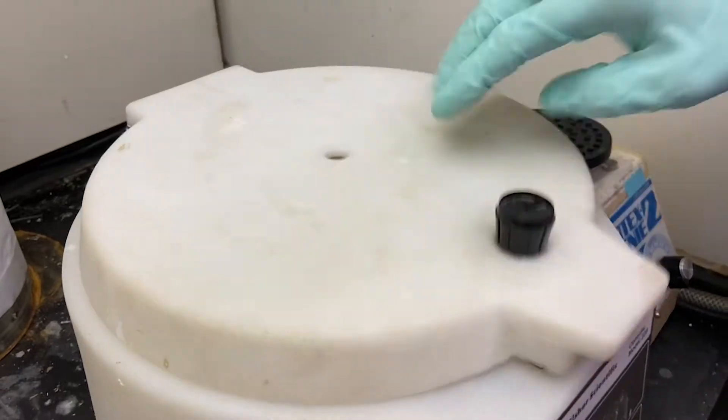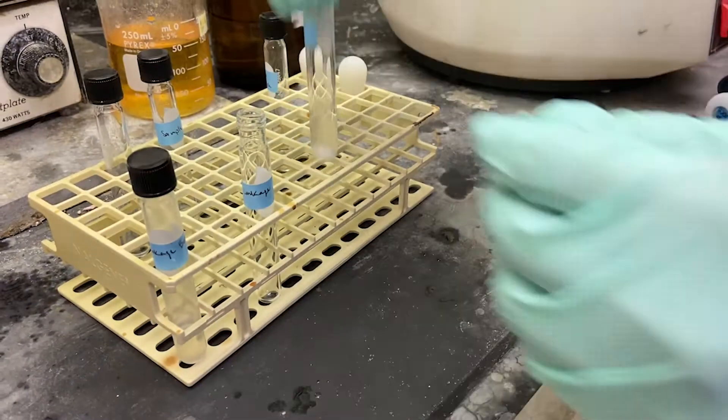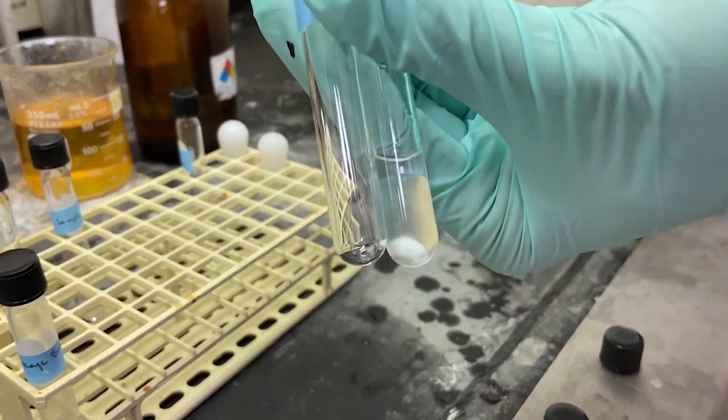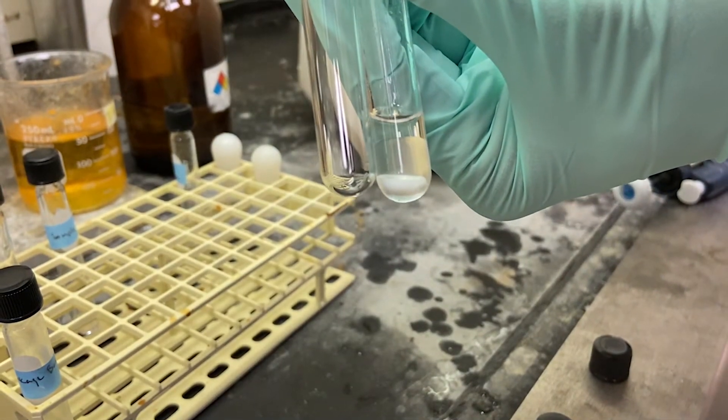This is repeated a total of five times and finally the DCM layer is transferred to another tube to be dried down under nitrogen stream fully.